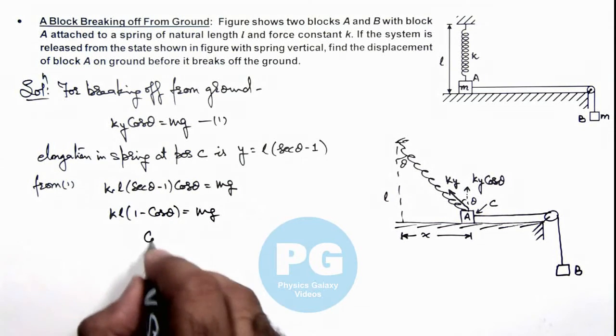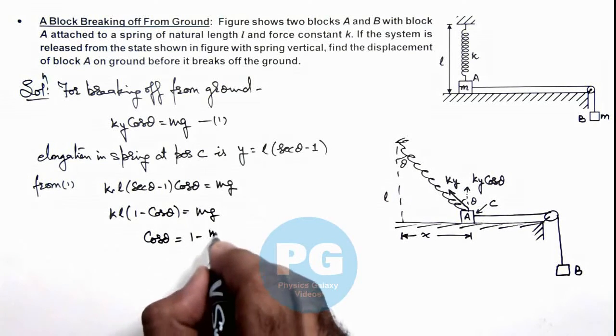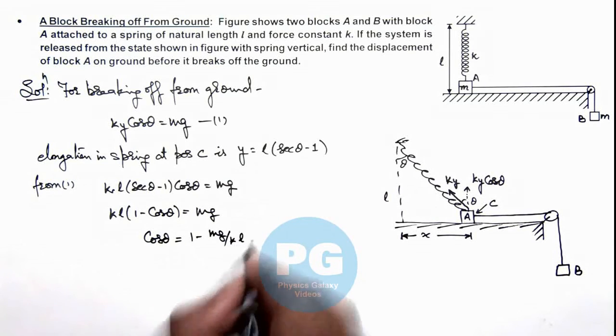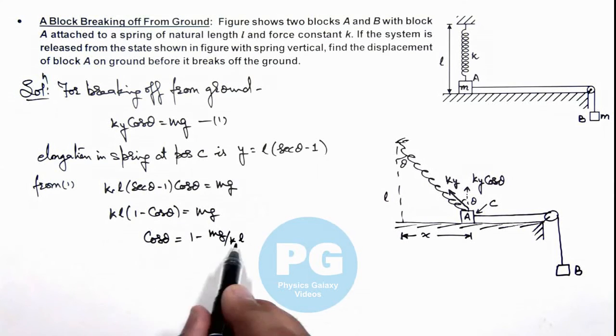Or the value of cos theta we are getting here is 1 minus m g by k l. So if we have got the value of cos theta...